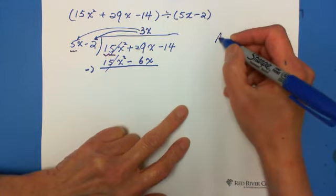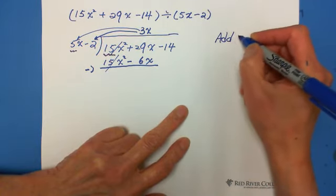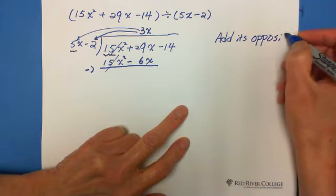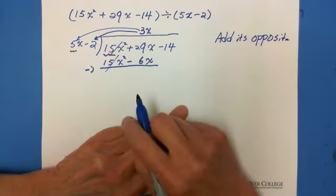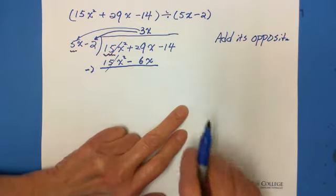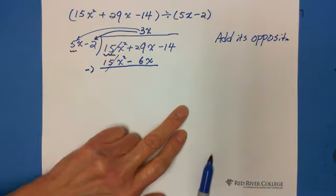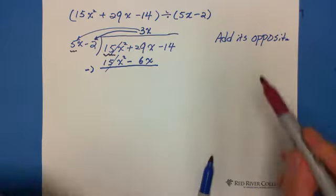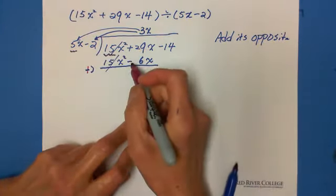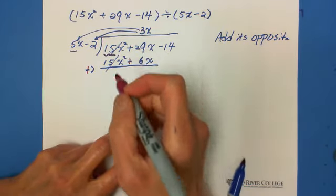Subtraction with integer, the rule is adding, add its opposite. That's why we do adding. It's much easier. So this is 35. Now we change it to adding. And its opposite. The negative 6x becomes positive.